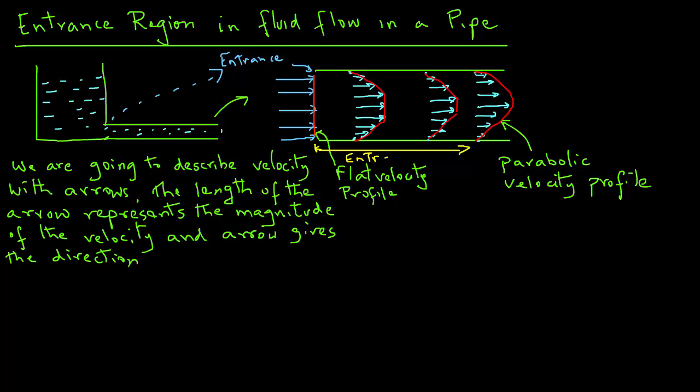This is where the fluid is entering the pipe, and the velocity profile is developing from a flat profile right at the entrance to a parabolic profile. Once it develops this parabolic profile, then along the further length of the pipe, it remains in parabolic shape.